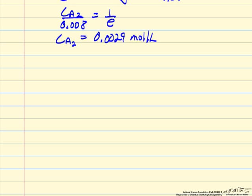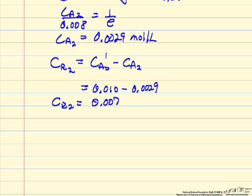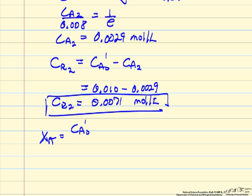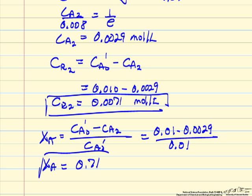And we can use stoichiometry then to determine the concentration of R leaving it. It's the inlet concentration if we assume we mix those feed streams together minus Ca2. And so Ca2, these are all moles per liter. The conversion of A is 71%. And so we've used the rate constant and the volumetric flow, we calculate the ratio from the first reactor and the second reactor to determine the conversion for the system.